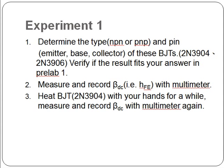Experiment 1: We'll give you two BJT and you have to determine the type and the pin. Also verify your results with the pre-lab. After you determine the type, use your multimeter to measure and record the beta.